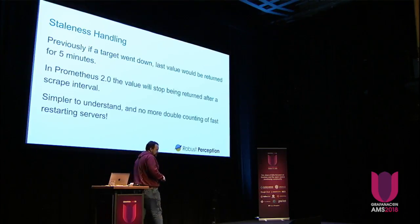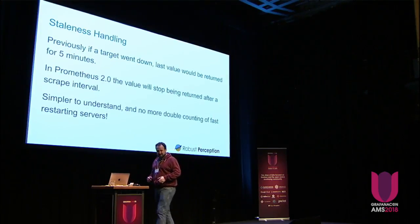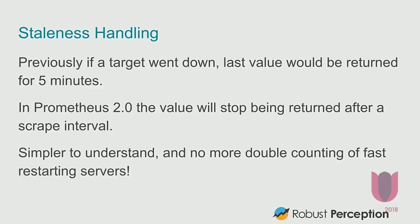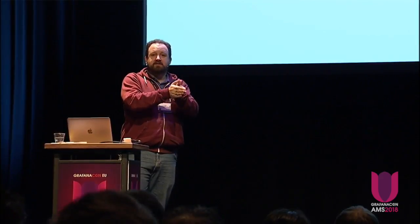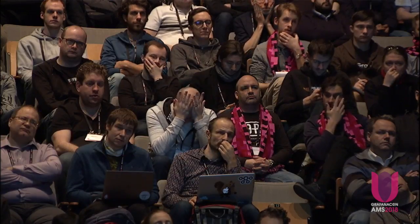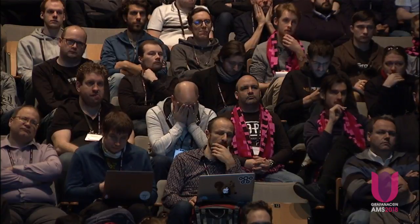I wanted to include a slide on staleness handling — I'll be honest, I don't fully admit to understanding it. This was one of the most requested features; it's how we deal with time series that have gone away. Previously, a query into Prometheus would include all time series that have had a value in the last five minutes. So if you built an alert on the absence of a time series — like if your API server time series disappears, please alert me — it would take five minutes for that alert to come through. In Prometheus 2.0, because we do our own service discovery and our own scraping, we can recognize when a time series has disappeared and propagate that effectively immediately. So your alerts will get much quicker and much easier to write.